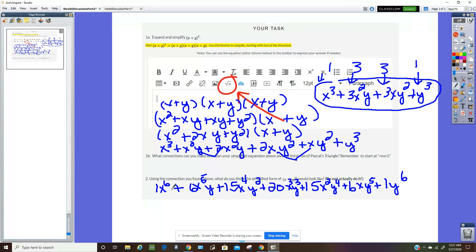And then y to the 0, y to the 1st, y squared, y cubed, y to the 4th, y to the 5th, y to the 6th. And notice that all the exponents add up to 6. 6 plus 0 is 6, 5 plus 1 is 6, 4 plus 2 is 6, 3 plus 3 is 6, 2 plus 4 is 6, 1 plus 5 is 6, and then 6 plus 0 is 6.